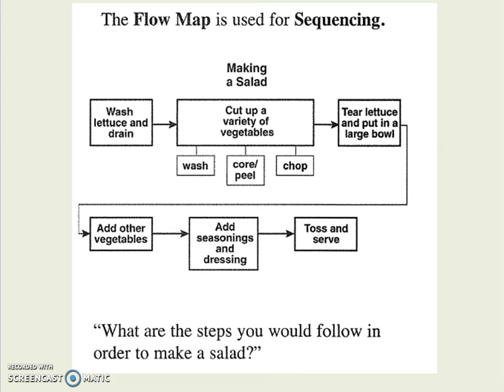A flow map is for sequential information — the plot of a story, historical events, the process or cycles in science, a multi-step problem in math, the evolution of characters in a story and how they end up starting one way and ending another. You can also put little details down below, so if something big happens in a story, you could put what happens to each character within that part of the book underneath the one large box.